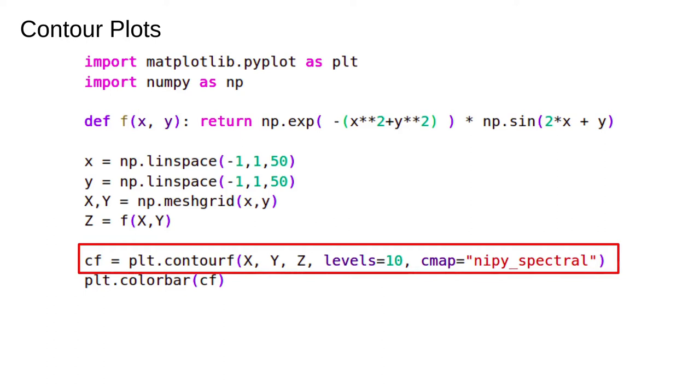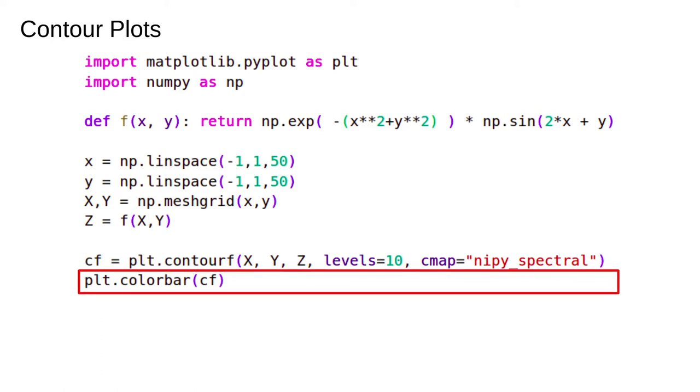We then call the contour function with the x, y and z arrays. The levels parameter tells the contourf function how many contours to draw and we specify another named colour map. We also plot a colour bar. Don't forget to do this. This is the output.